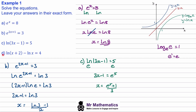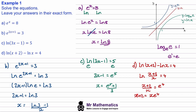Let's try question D. We can rewrite the natural log of x plus 2 minus the natural log of x by putting these together using the division rule, so we get the natural log of (x plus 2) over x equals 4. Now we can raise e to the power of both sides, and that will cancel out the natural log. Then we move the x to the right-hand side, put all the x's on the same side, and factor out the x. Then we divide both sides by e to the 4 minus 1, so x equals 2 over (e to the 4 minus 1).